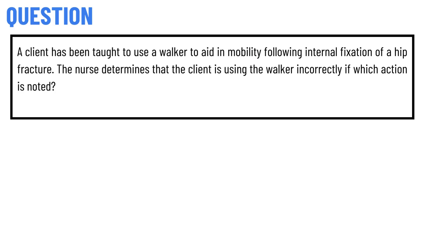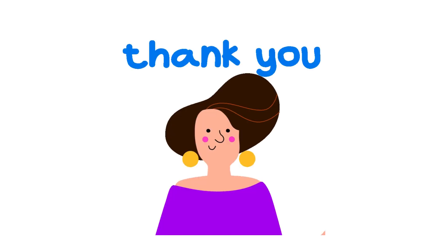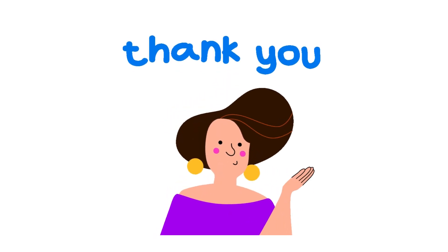Our today's question is: a patient has been taught to use a walker to aid in mobility following internal fixation of a hip fracture. The nurse determines that the patient is using the walker incorrectly if which action is noted? The correct answer of the question: the patient advances the walker with a reciprocal motion.